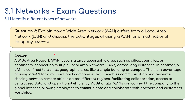For question three: a WAN covers a large geographical area such as cities, countries, or continents, connecting multiple LANs across long distances. In contrast, a LAN is confined to a small geographical area, like a single building or school campus. The main advantages of using a WAN for a multinational company are that it enables communication and resource sharing between remote offices across different regions, facilitating collaboration, access to centralized data, and operational efficiency. Additionally, WANs can connect the company to the global internet, allowing employees to communicate and collaborate with partners and customers worldwide.